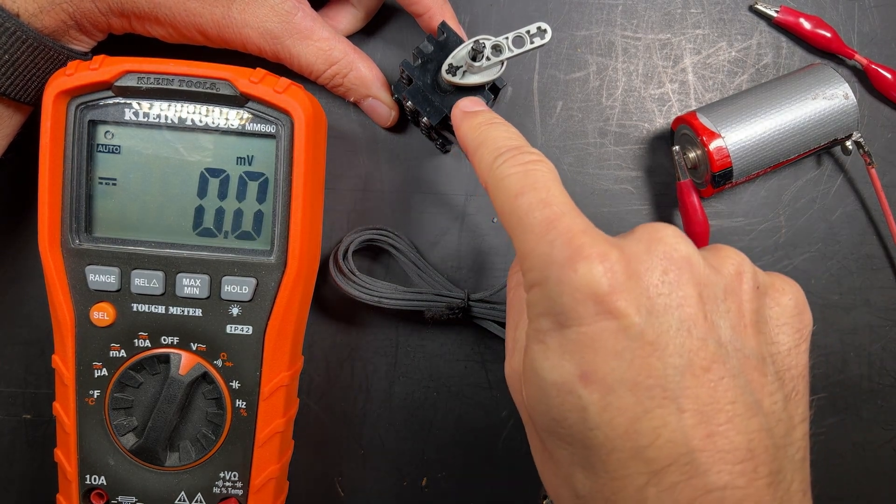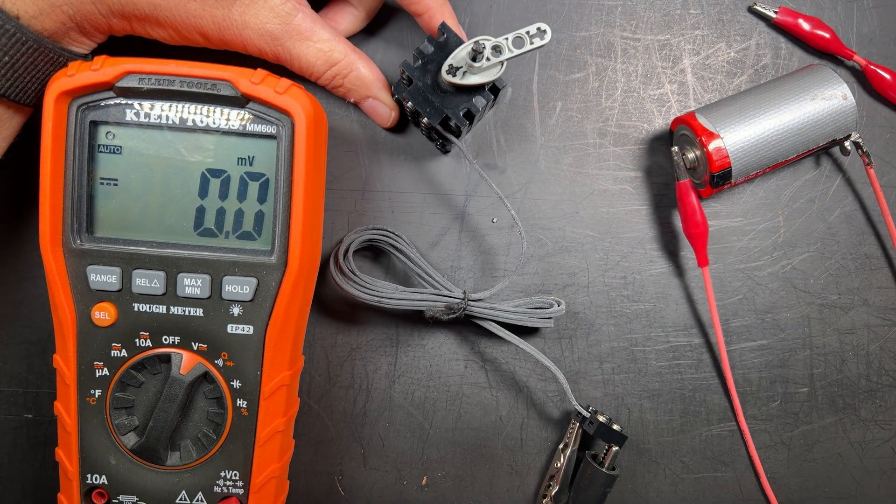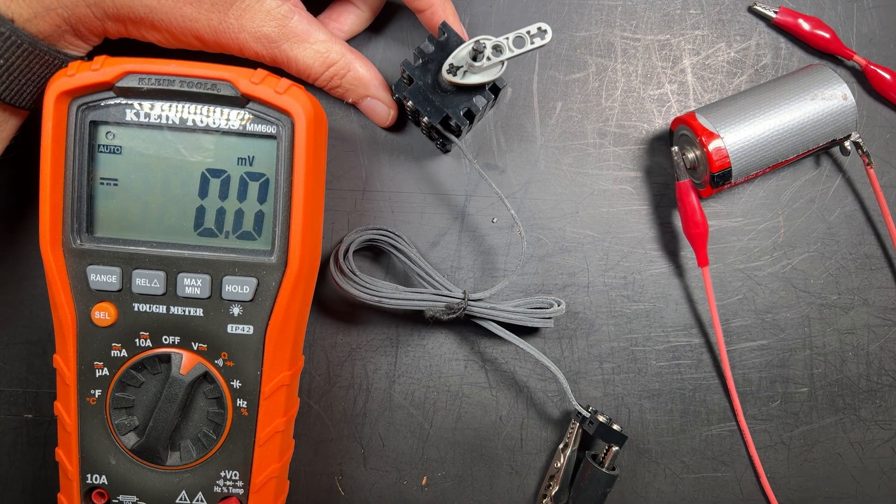It's just a coil of wire that spins in a magnetic field, and that changing magnetic flux induces an electric field, which makes a current. Boom.